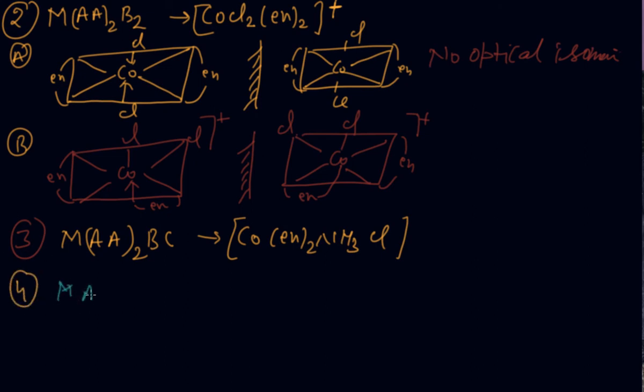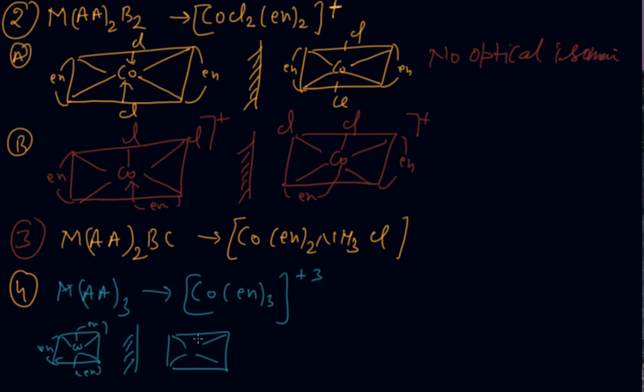And fourth is M(AA)₃. This also needs care when you draw. Example: Co(en)₃³⁺. Draw this in a way that you will get the mirror image. I am drawing, this is en, put here en, and then en. Now take its mirror image. You understand? En will come on this side here, and these both are rotating.